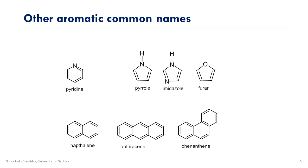Some other names for common aromatic groups you'll come across are shown here. Pyridine is like benzene but with a nitrogen replacing one of the CH positions. The next group are all five-membered rings but are aromatic according to the criteria we will learn this week. Note that the p orbitals of these atoms all participate in pi bonding with the double bond pi electrons, so the total number of pi electrons satisfies the 4n+2 rule. The last three are benzene rings joined in one continuous aromatic system, with common names naphthalene, anthracene and phenanthrene.